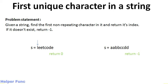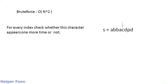Let's see how to solve it. The brute force approach would be taking two for loops and for every index, checking whether that character appears one more time or not. So if I am at 'a', I will go through all the characters and see whether 'a' is present again. If found, it is not unique; otherwise it is unique and I return that index. However, this approach will not work in an interview because the time complexity would be O(n²).